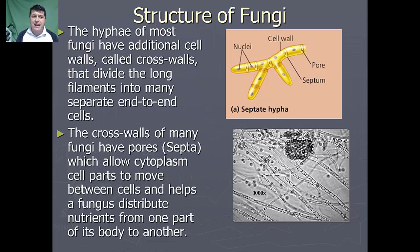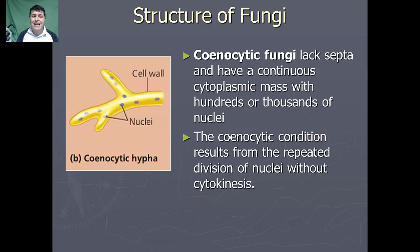The hyphae of most fungi have additional cell walls called cross walls that divide the long filaments into many end-to-end cells. The cross walls of these fungi will have septa, which will allow for cytoplasm and other cell parts to move between the cells and help the fungus distribute nutrients from one part of the body to another. Coenocytic fungi actually lack septa and have a continuous cytoplasmic mass with hundreds or perhaps even thousands of nuclei.